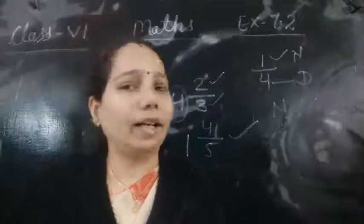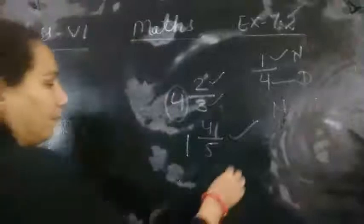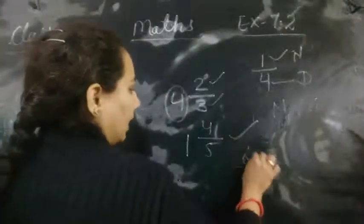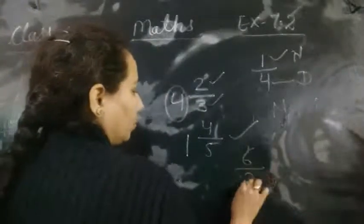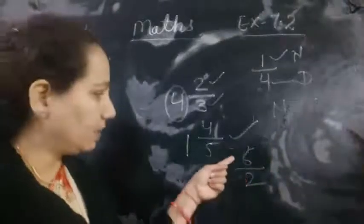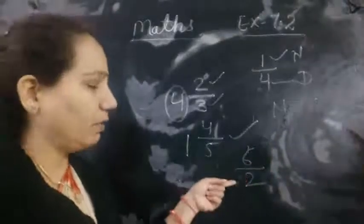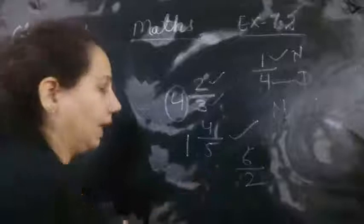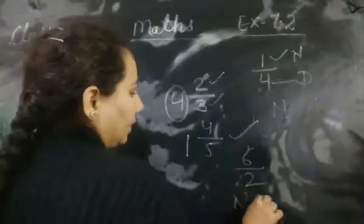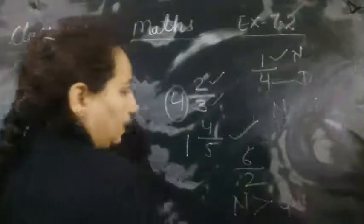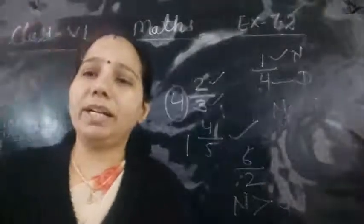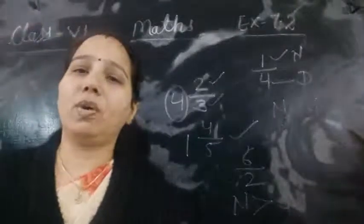For example, when the numerator is greater than the denominator — for example, 6 by 2 — this is called an improper fraction.